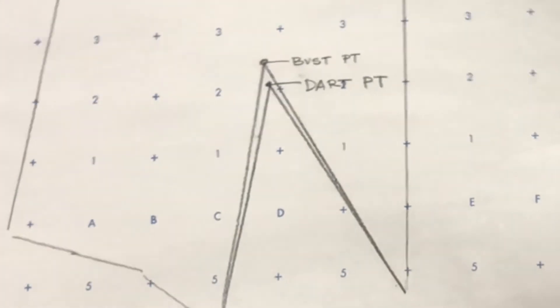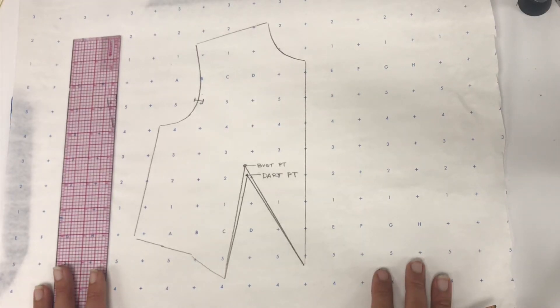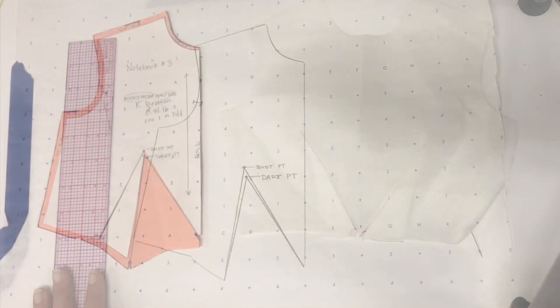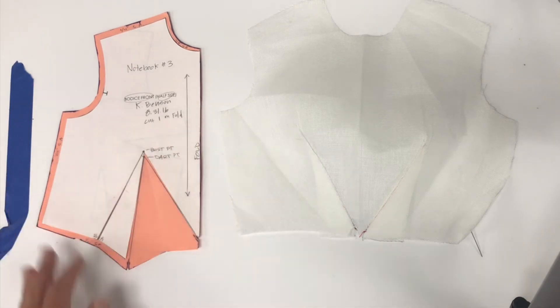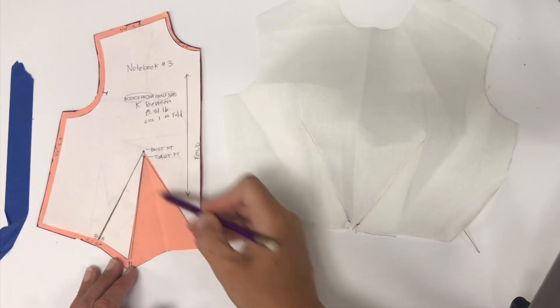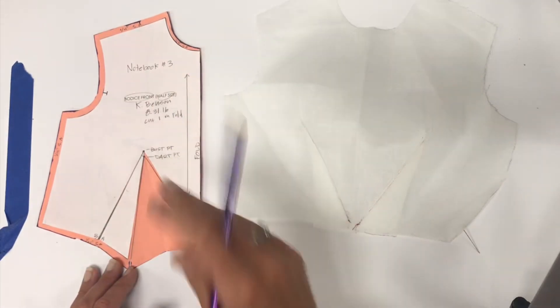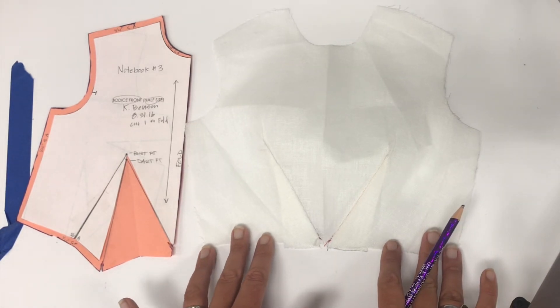Okay. And now the next step is to add seam allowance and properly label our pattern and then cut it out and give it a test fit. When you are finished, your notebook sample should look something like this where you have your dart at the center front waist. You have your seam allowance. You've labeled your pattern. And then you also have your sewn test fit sample as well. Thank you. Alright.